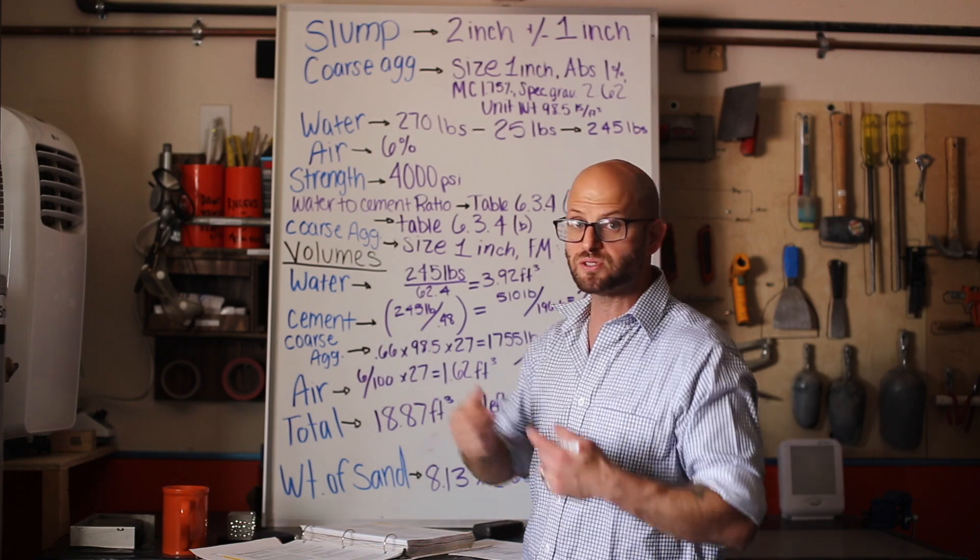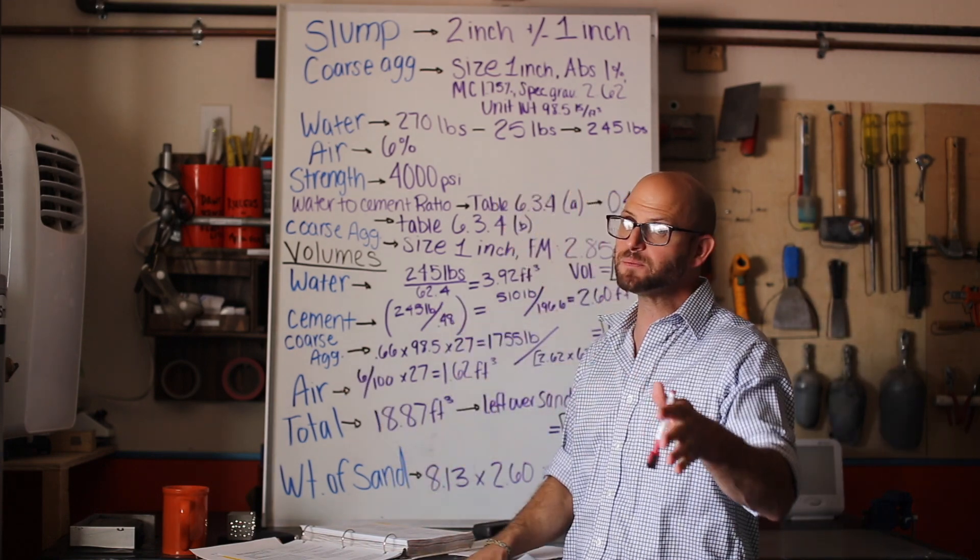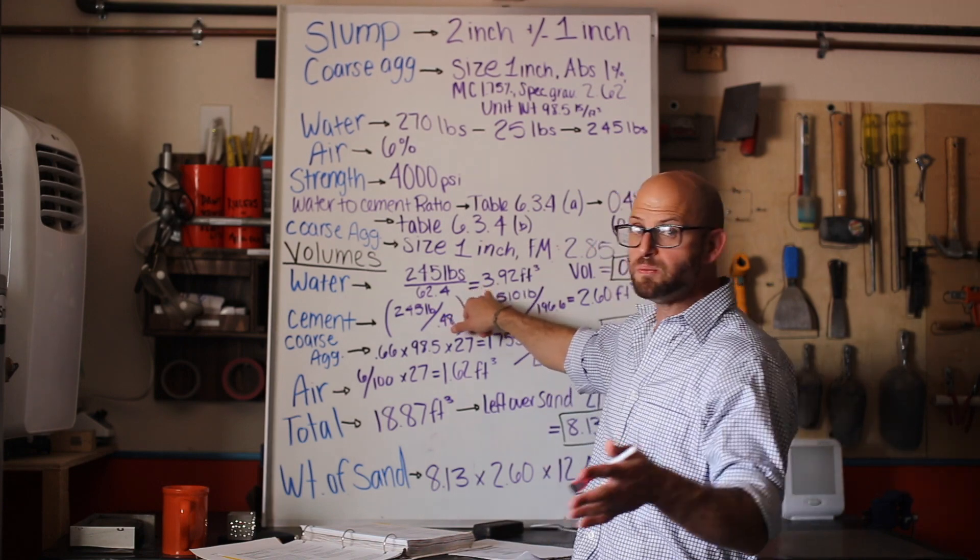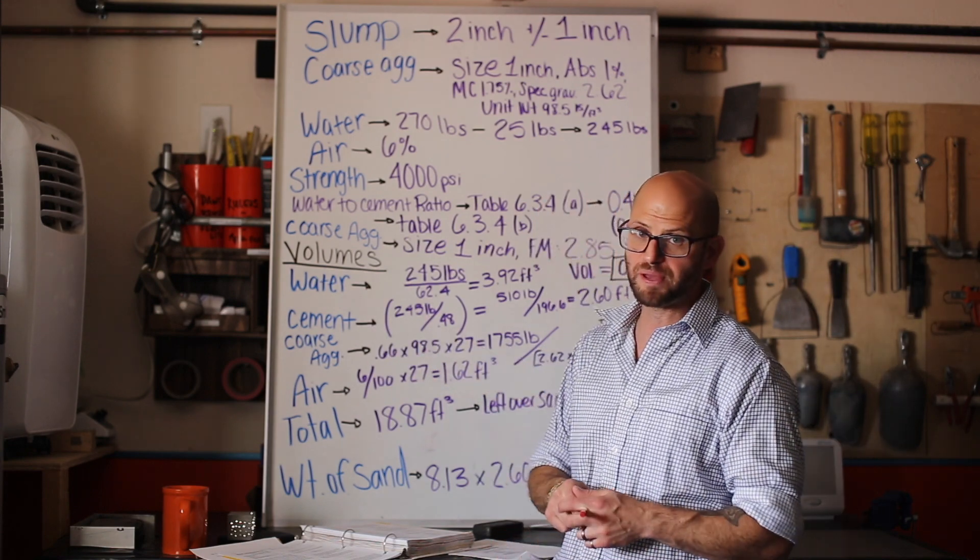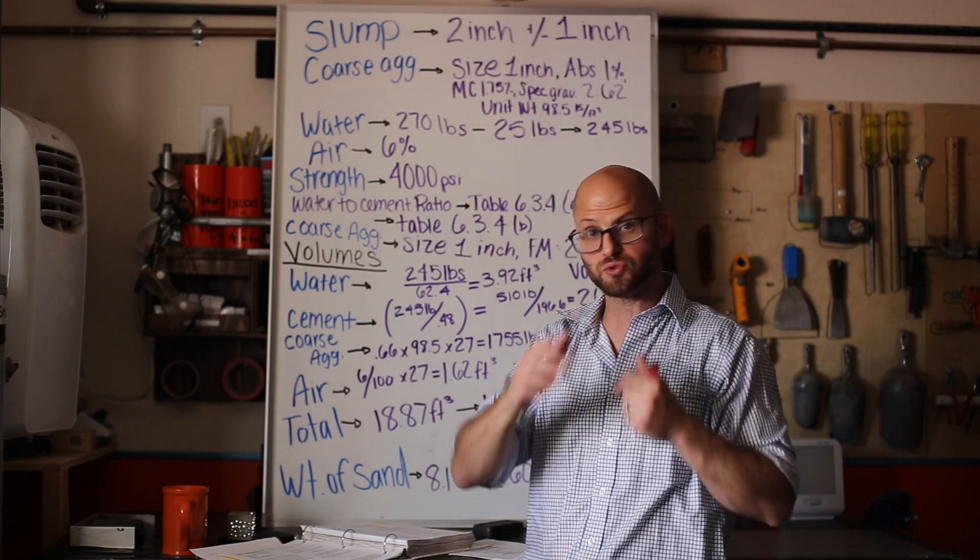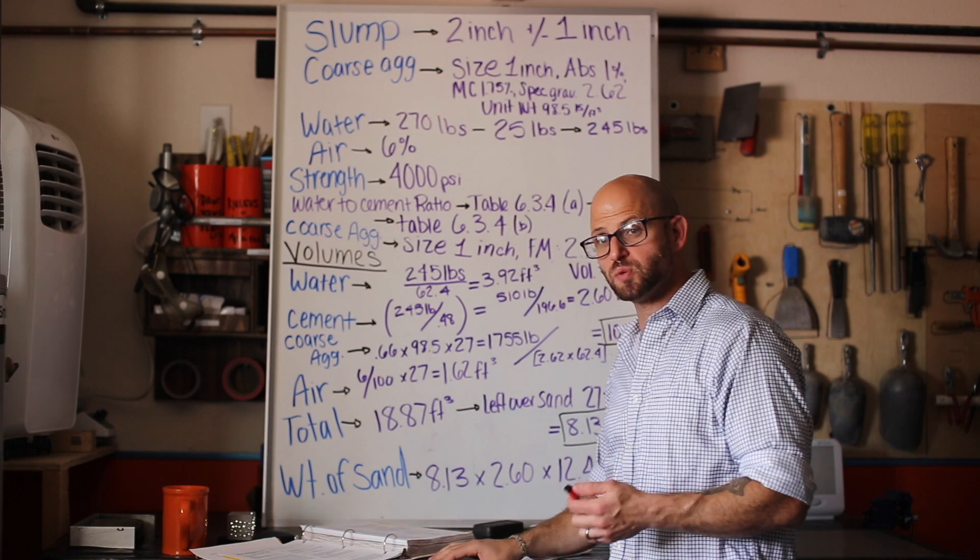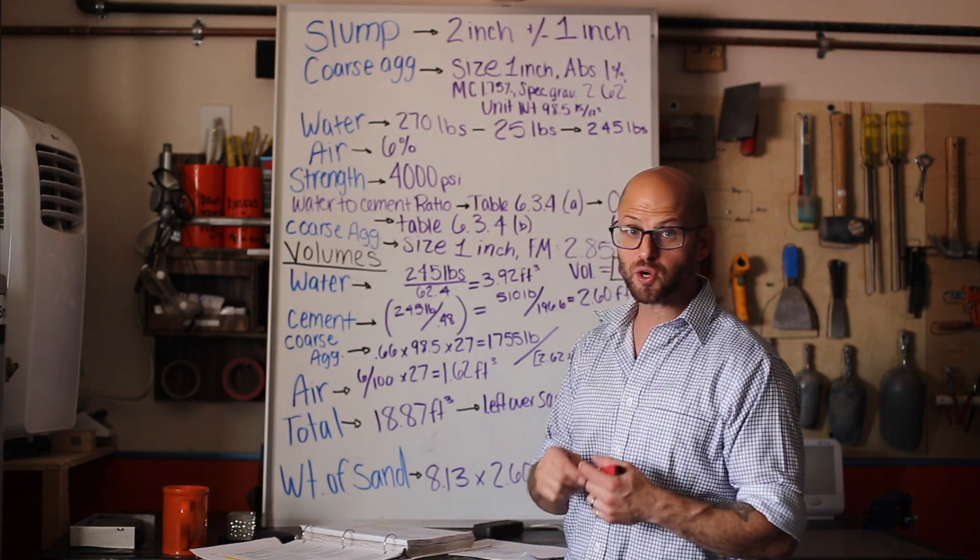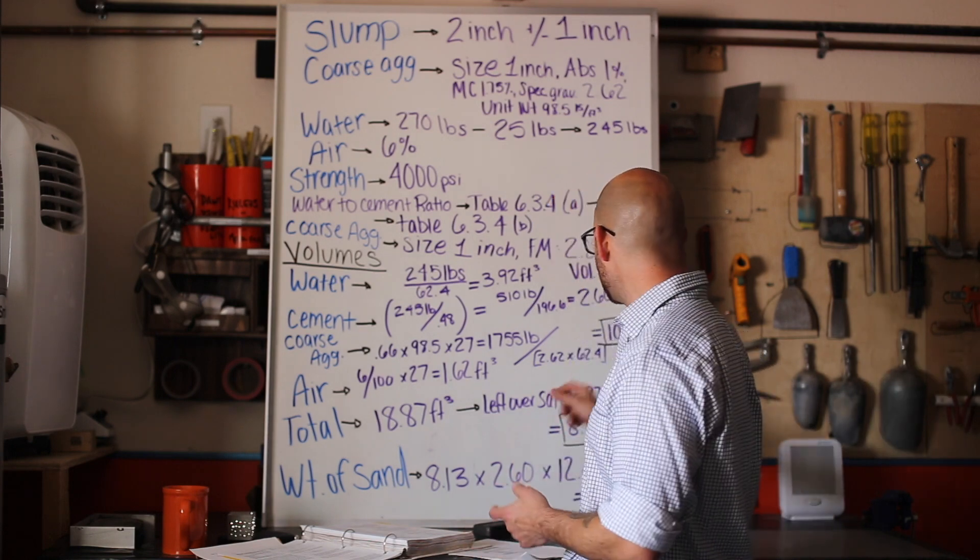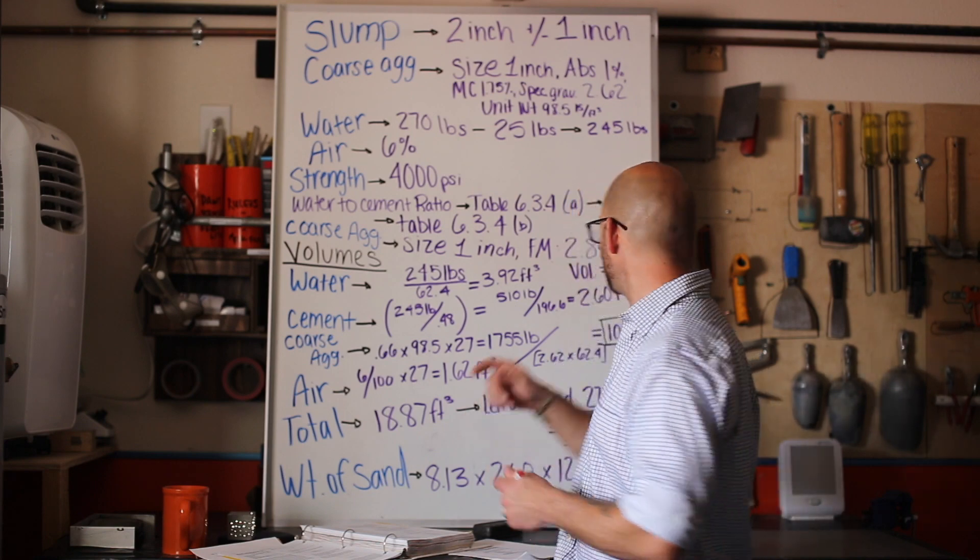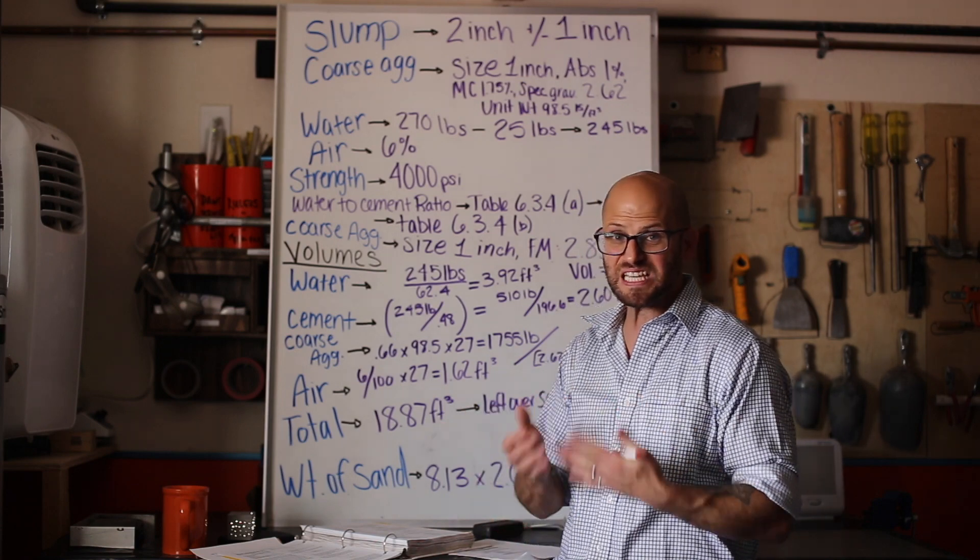The first thing is how much volume are we getting from our water? We take 245 pounds of water in that cubic yard and divide it by our unit weight of water which is 62.4. This is going to be a common theme. Based off of that, we've got 3.92 cubic feet out of our 27 cubic feet that's being allocated for water. The next thing is our cement. We've got 245 pounds of water divided by 0.48 because our water cementitious ratio, weight of water over weight of cementitious, equals 0.48. That gives us 510 pounds per cubic yard for our total cementitious.